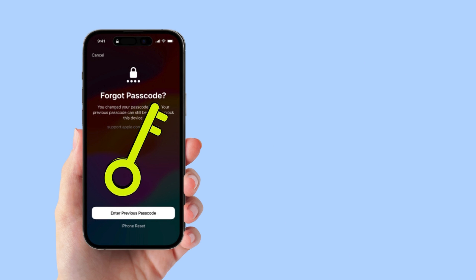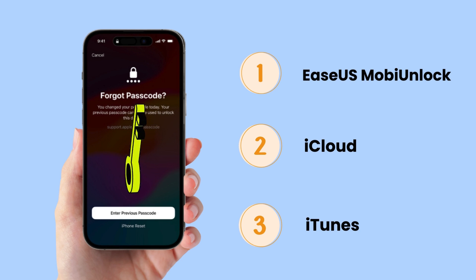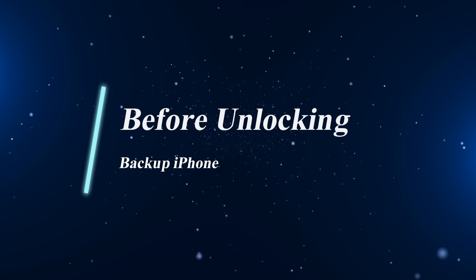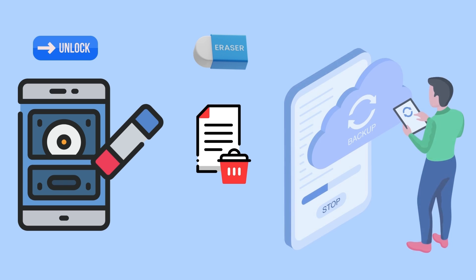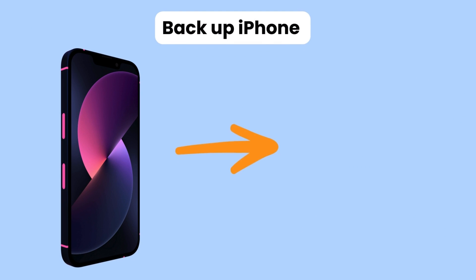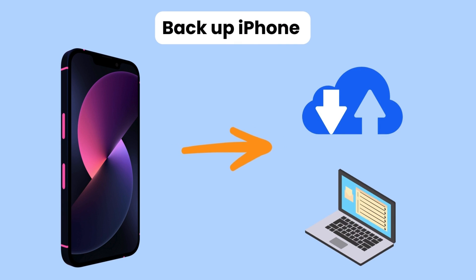We'll explore three methods to unlock your iPhone, including using a useful unlock tool, iCloud, and iTunes. There are some things to know before you unlock. Generally, unlocking means restoring your iPhone — it will erase all the data on your iPhone. Make sure you have backed up your iPhone to iCloud or your computer to ensure no data loss. Let's get into the unlocking process.